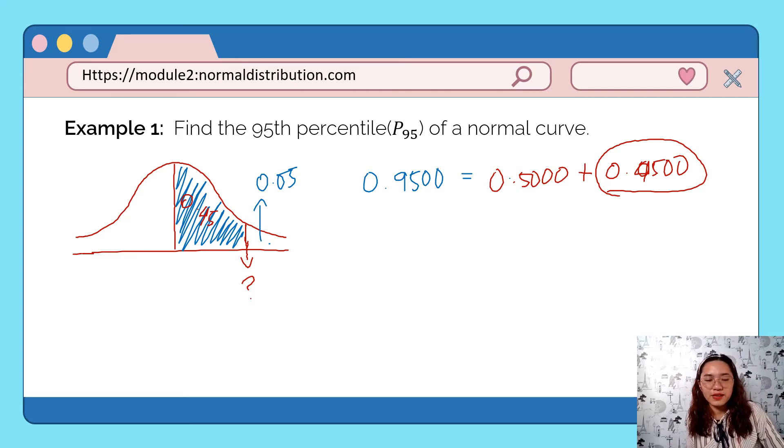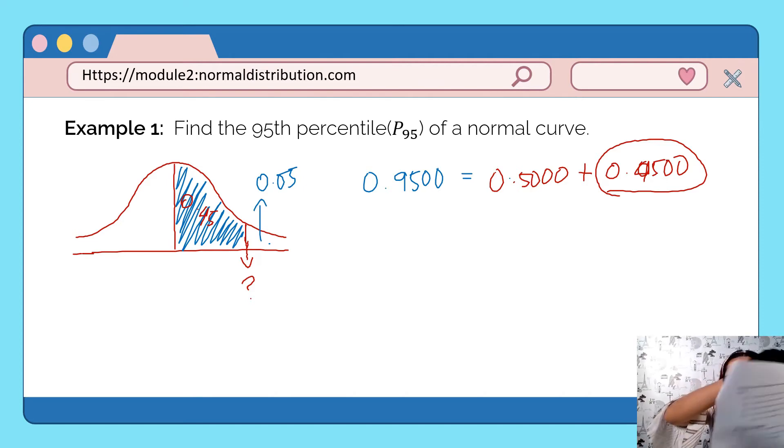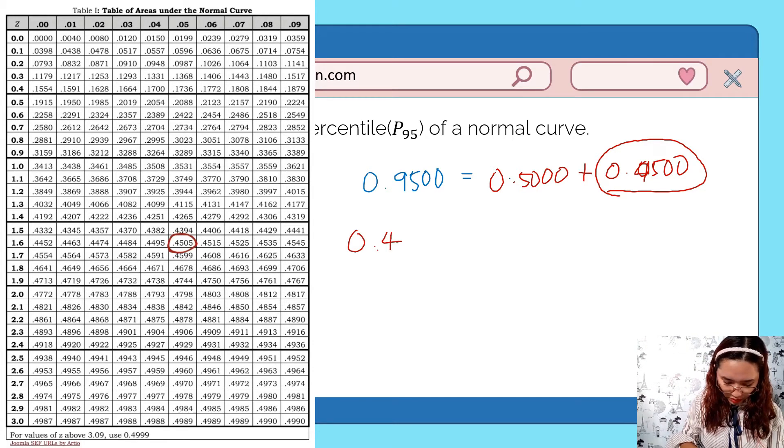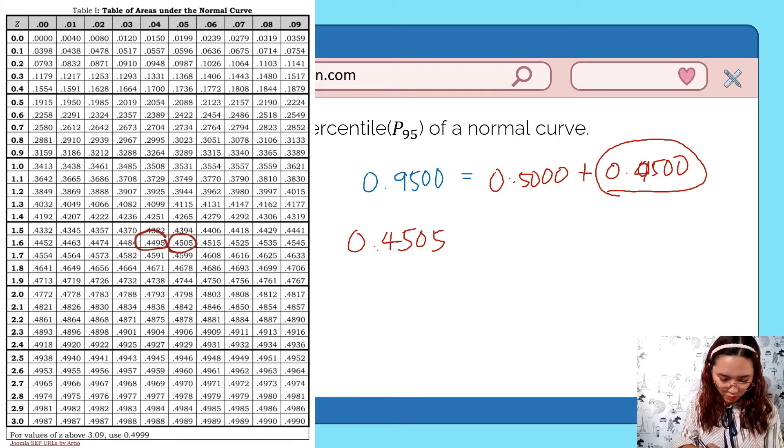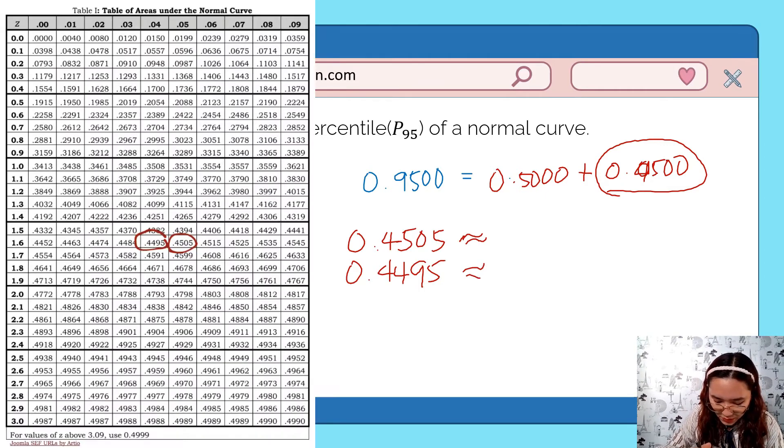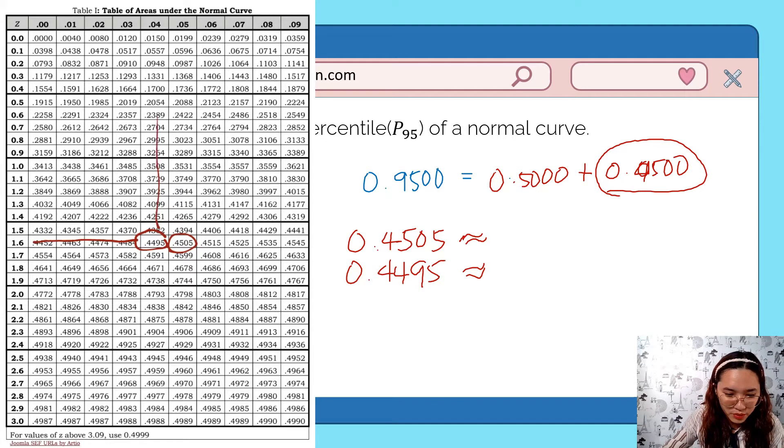Now, let's find 0.45 in the z-table. If we can't find the exact area, we take the nearest area. So 0.45 - actually there isn't an exact match. The closest to it are 0.4505 and 0.4495. These two are equally close because they're both 0.005 away from 0.45. So let's take both and get their corresponding z-scores.